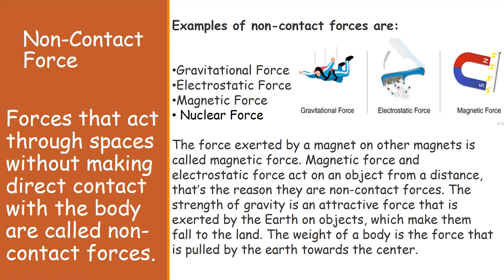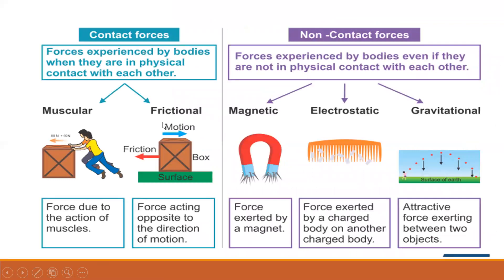In the universe, every object exerts a force on another object equal in magnitude but opposite in direction. The Sun exerts a gravitational force on all planets including Earth, causing them to orbit the Sun. Similarly, Earth and the Sun exert forces on each other. Electrostatic force arises when objects are rubbed; charges appear on the surface, and like a magnet, negative and positive charges attract each other.